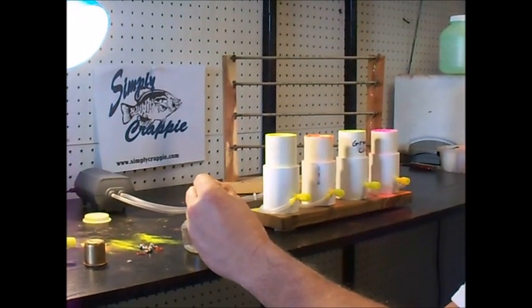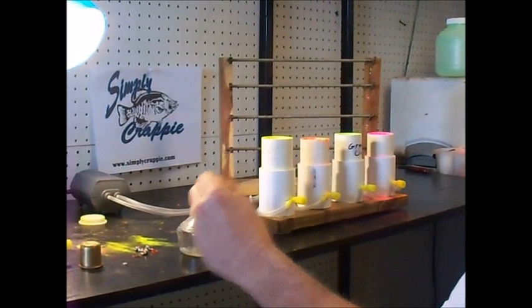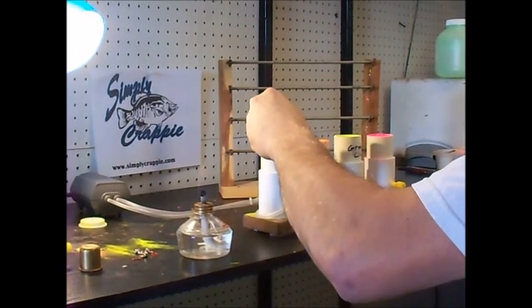Your jig head or spinner blade will need to be heated to between 300 and 325 degrees. Here we use an alcohol lander.